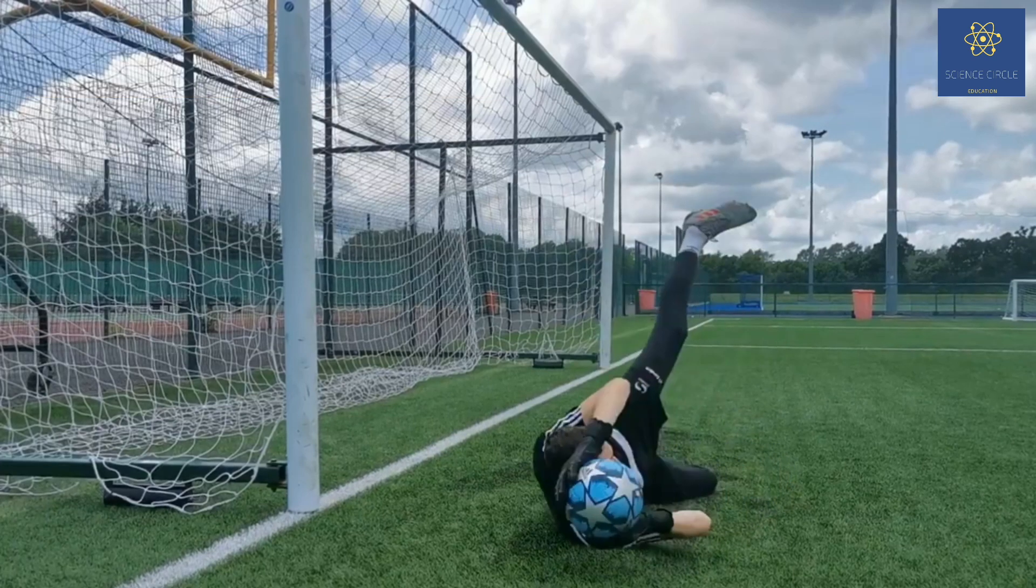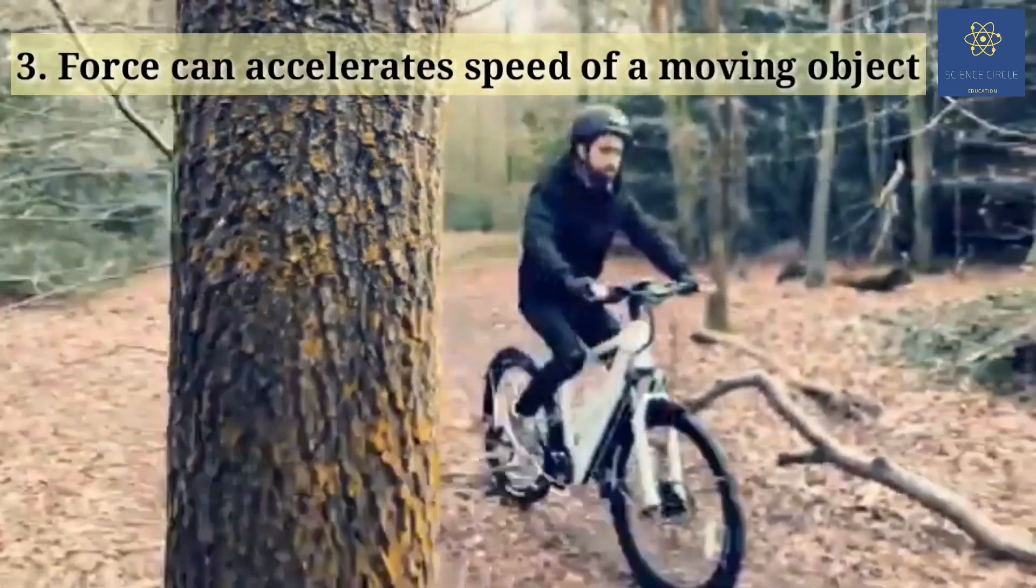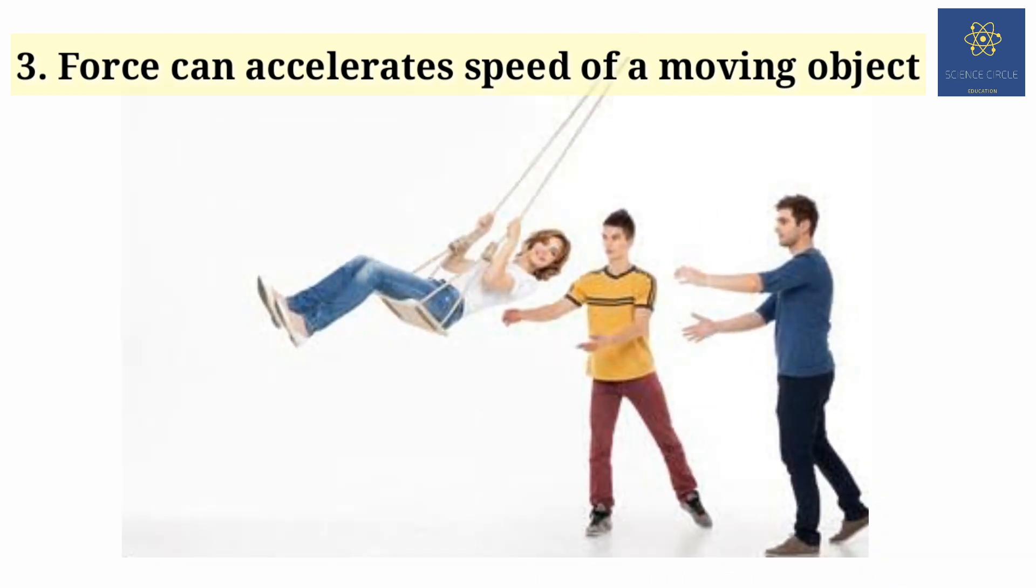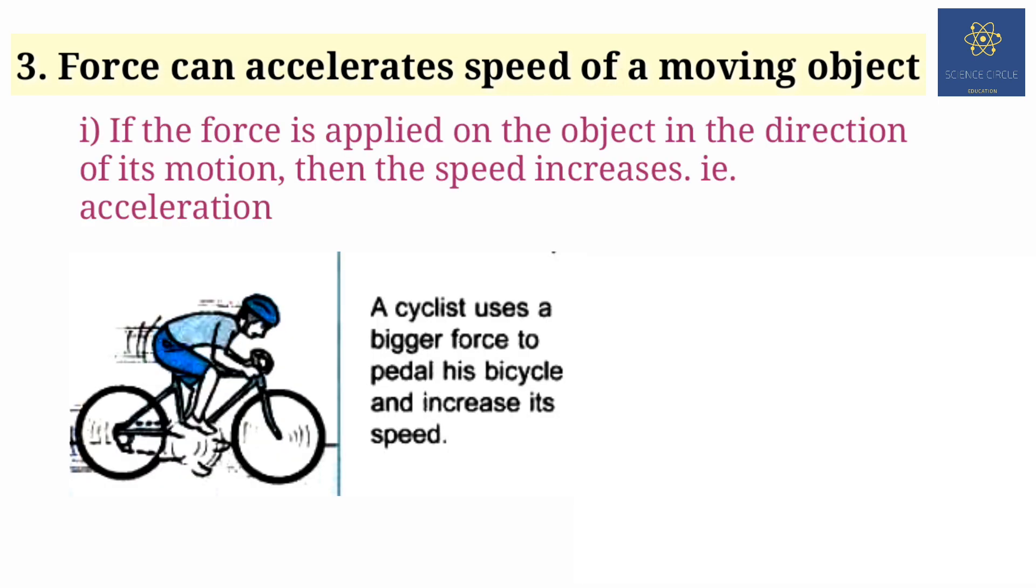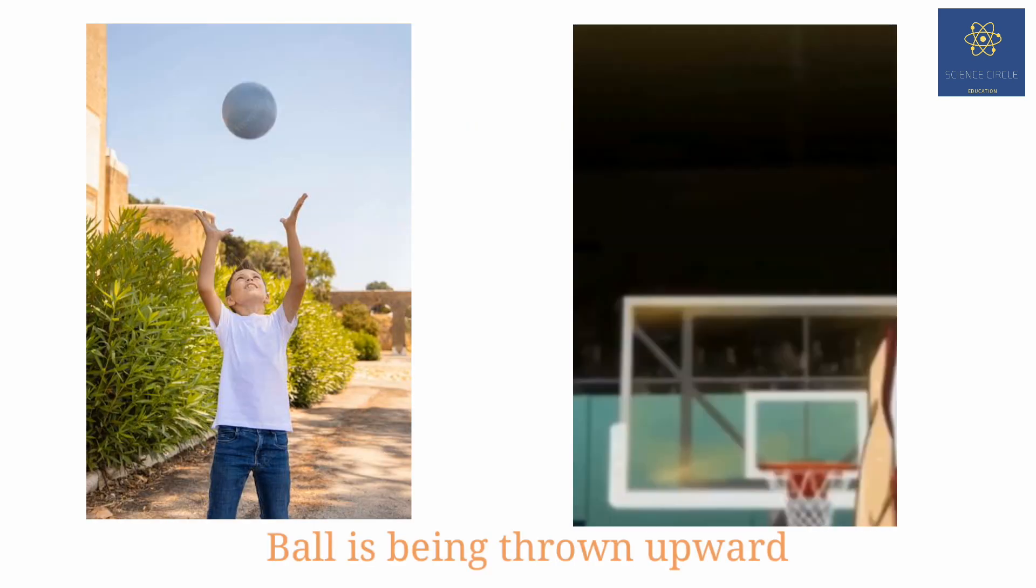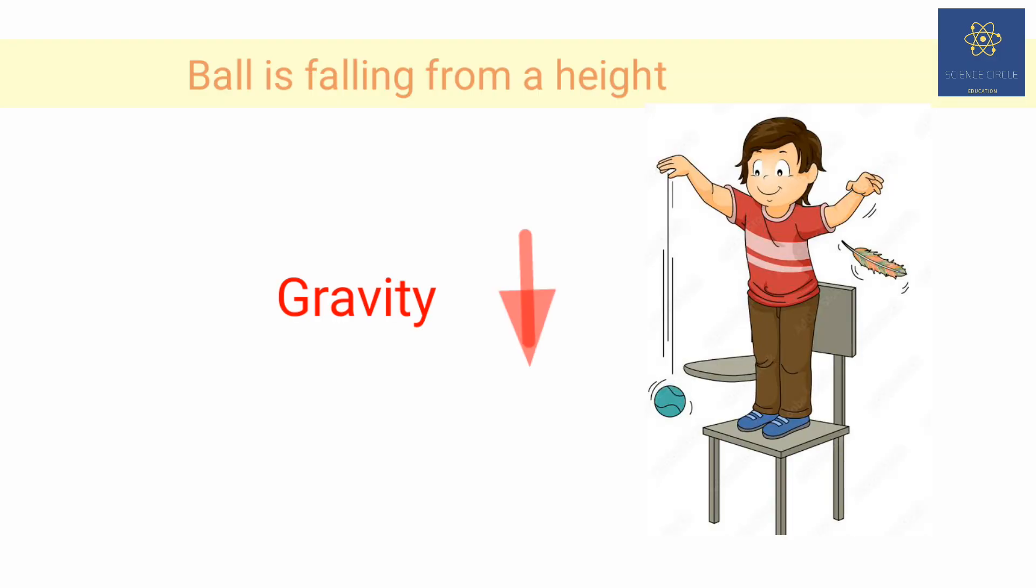Third point: it can also accelerate the speed of a moving object. If the force is applied in the direction of the motion of the object, the speed will increase. On the other hand, if the force is applied in the direction opposite to the motion, then the speed will decrease. You have observed a ball when thrown upward, the speed goes on decreasing, but when a ball is falling from a great height, its speed increases. This is because the force of gravity is allowing it to fall downwards.